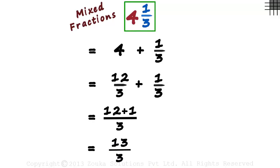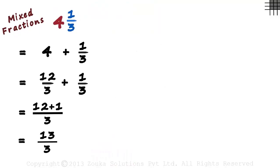So this mixed fraction can also be written as an improper fraction. 4 1 by 3 is the same as 13 by 3. But let's look at a very logical way of understanding mixed fractions.